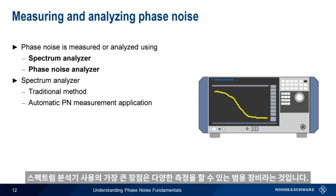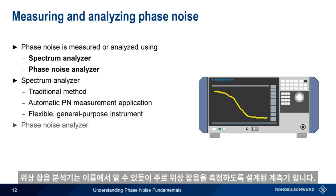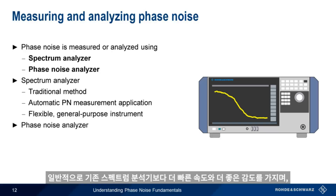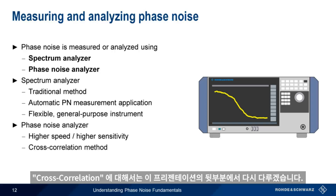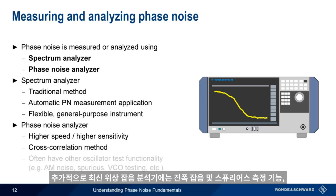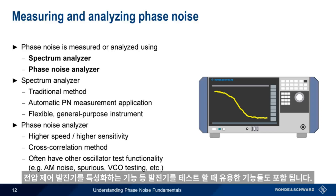The greatest advantage of using a spectrum analyzer is that it's a flexible, general-purpose instrument that can be used for a wide range of other measurements. A phase noise analyzer, as the name implies, is an instrument primarily designed to measure phase noise. They usually have higher speed and sensitivity than traditional spectrum analyzers, the increased sensitivity being mostly due to the cross-correlation method — something we'll cover a bit later. In addition, many modern phase noise analyzers also have other functionality helpful when testing oscillators, such as the ability to measure amplitude noise and spurious emissions, or the ability to characterize voltage-controlled oscillators.